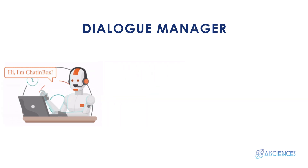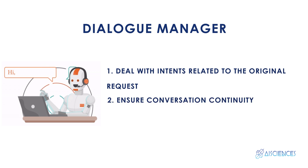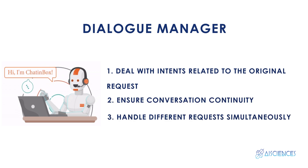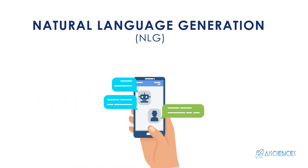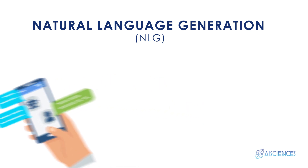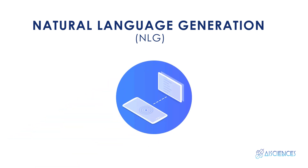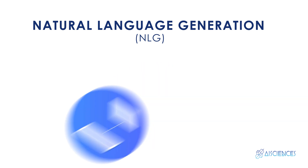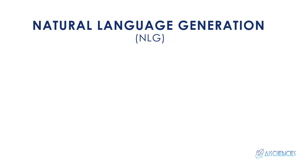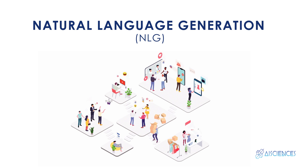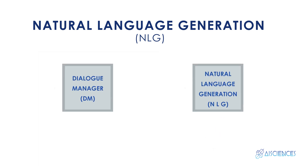The Dialogue Manager makes sure to deal with intents related to the original request, ensure conversation continuity, and handle different requests simultaneously. The third component is Natural Language Generation, NLG — the last component of the AI-powered chatbot's architecture. This is the part where the user reply is constructed on the basis of the output compiled from the Dialogue Manager. NLG converts structured data into text; in a way, it does the reverse of what NLU does. NLG contains several user-defined templates that map to action names, so based on the action determined by the DM, the corresponding template message is invoked. If the template requires some placeholder values to be filled up, those values are also passed by the DM to the NLG.